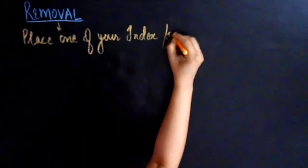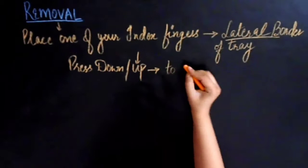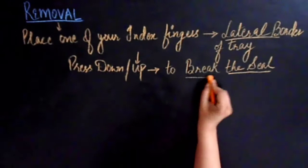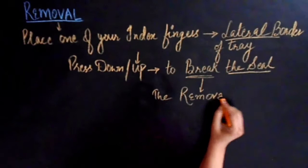After the alginate has set, place one of your index fingers along the lateral border of the tray and press down for the upper impression or up for the lower impression in order to break the seal formed by the set material. Once the seal is broken, carefully remove the tray from patient's mouth. Gently pull the tray straight down for upper impression or up for lower impression away from the teeth.